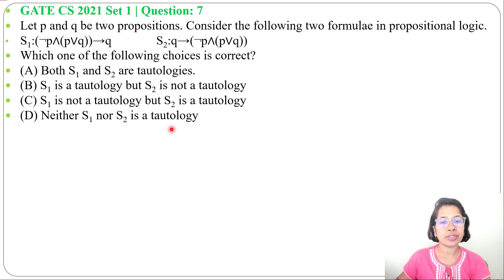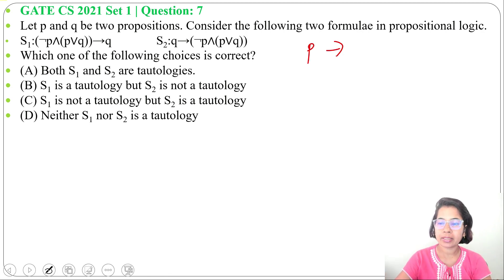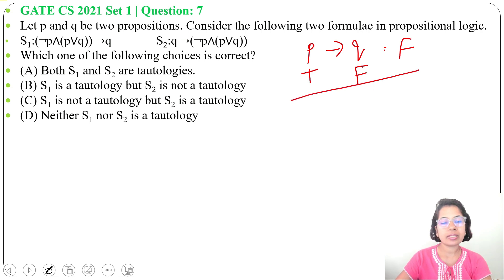A compound proposition is a tautology if its truth value is always true. We can solve this in different ways — I will solve it in two ways. One is by truth table, and another using the basic implication rule. We know P implies Q is false only when P is true and Q is false. I will use this rule to determine whether S1 and S2 are tautologies.